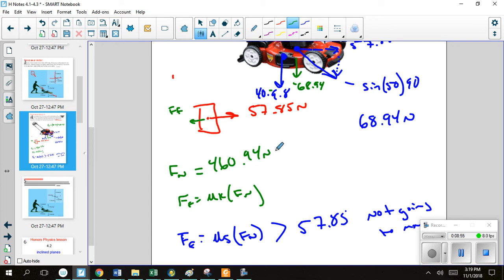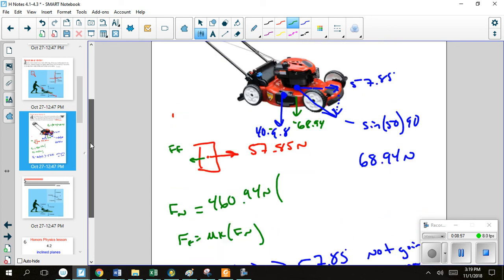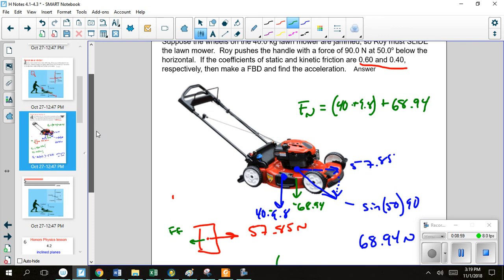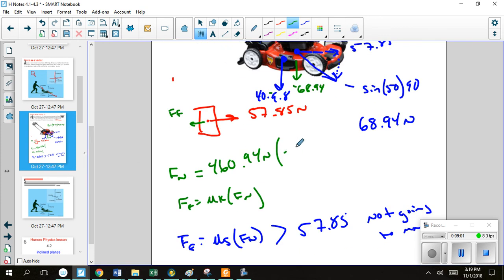Now we're going to take that and multiply it by our coefficient of static friction, which is 0.6, to see if it moves. And remember, if it's greater than this 57.85, it's not going to move. And lo and behold, it is, this is 276.6 newtons, so not going to move. Acceleration equals 0. Alright, I'll see you again next time for 4.2.